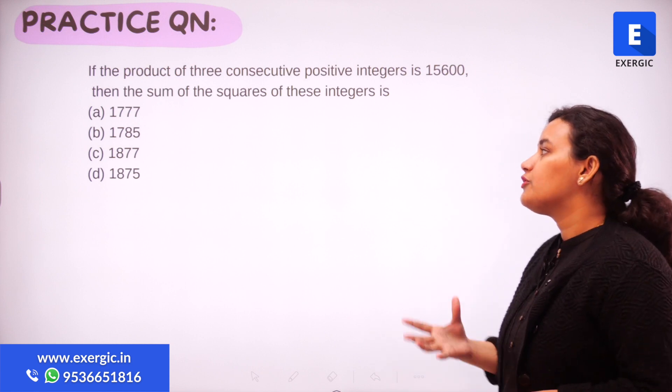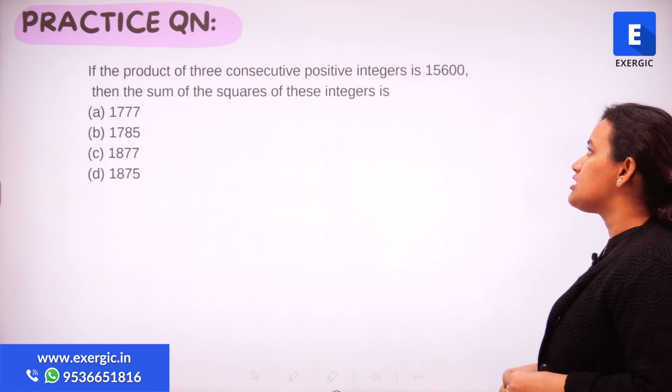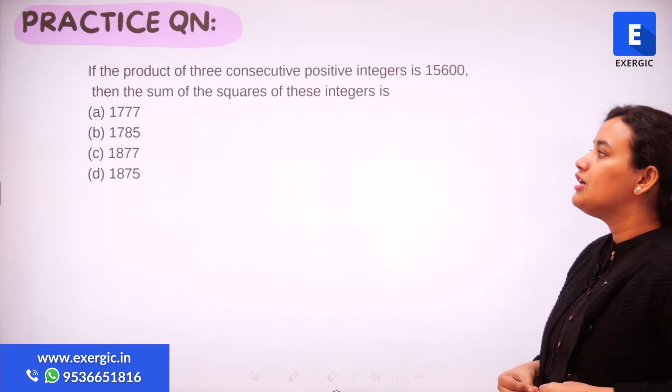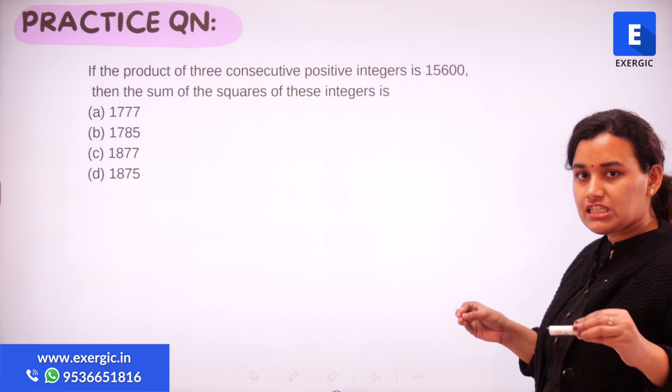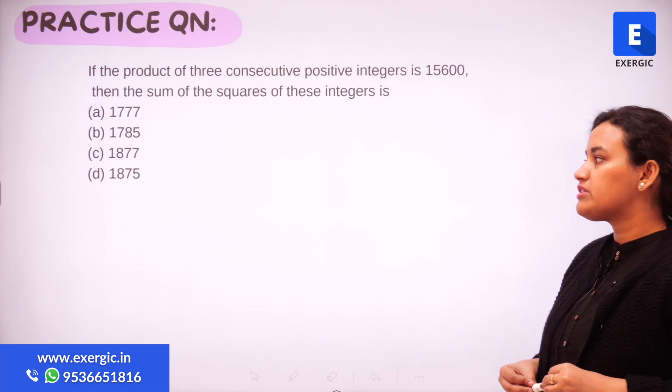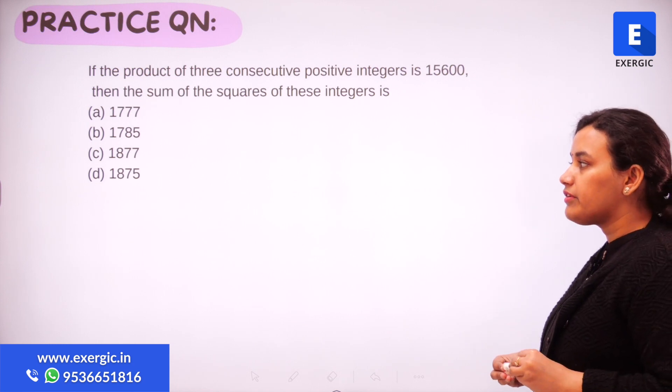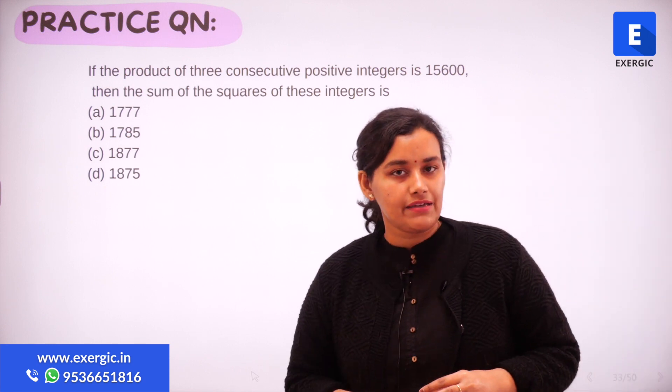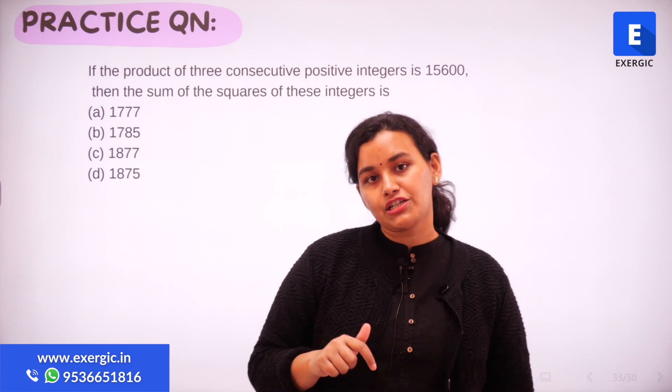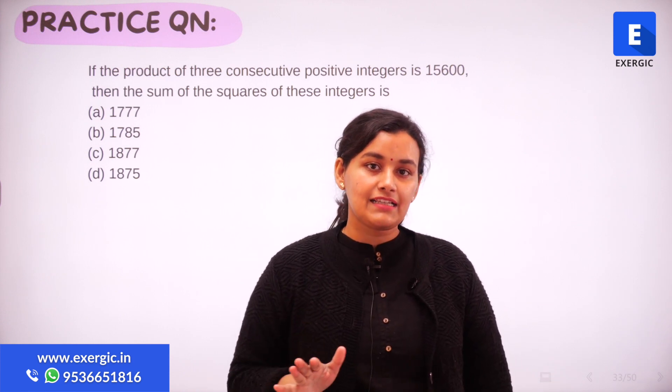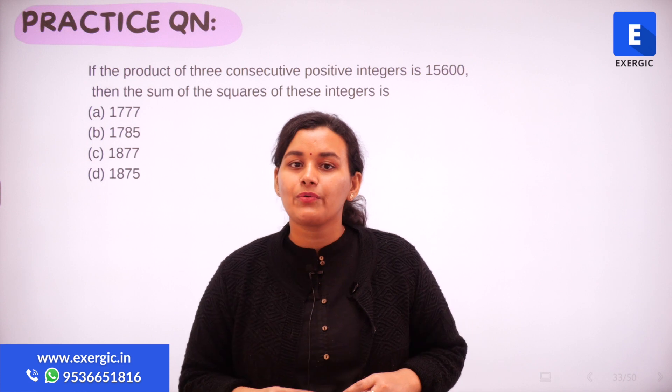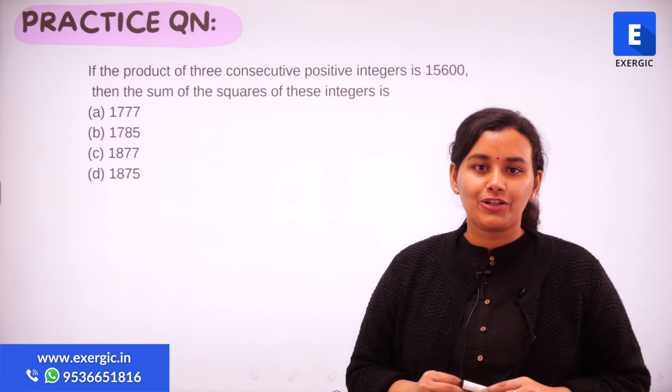Here's the practice question for you. If the product of three consecutive positive integers is 15600 then the sum of the squares of these integers is how much? The options are 1777, 1785, 1877 and 1875. So give this question a try. It's a good question. Leave your answers and solutions in the comments section below. Subscribe to the channel if you're finding these videos helpful. Also click on the like button, share it with your friends. I will see you tomorrow with another question of Quantitative Aptitude for GATE 2022. Take care.